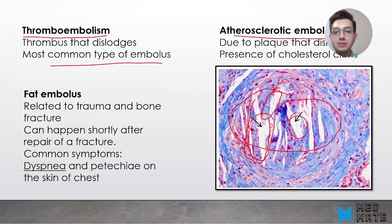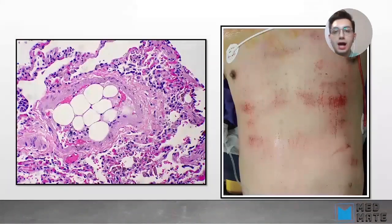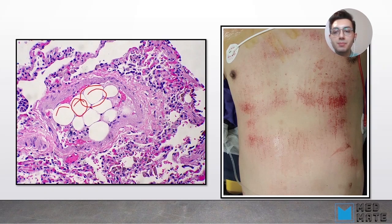The next type is fat embolism, which is related to trauma and bone fractures. When there is trauma, secondary to that we can have fat embolism. It can happen shortly after repair of a fracture as well. Common symptoms are dyspnea and petechiae on the skin of the chest. Here you can see fat cells under the microscope, and petechiae present on the chest of this patient.